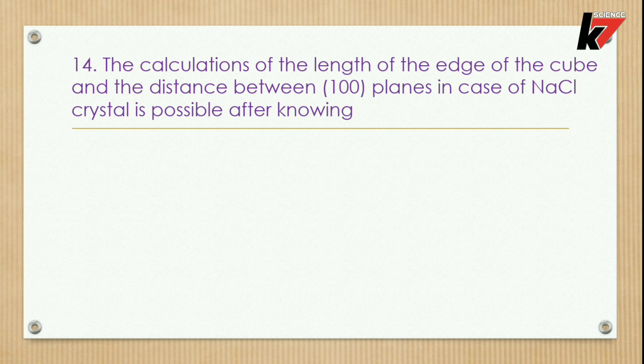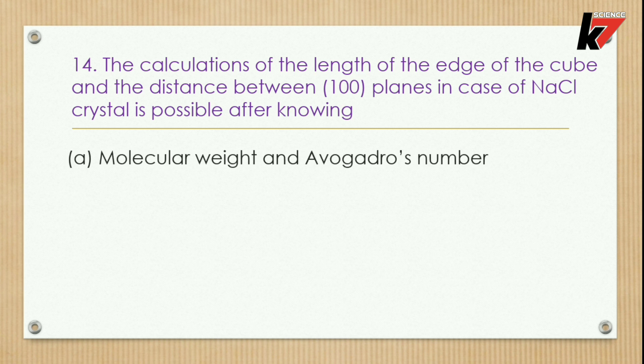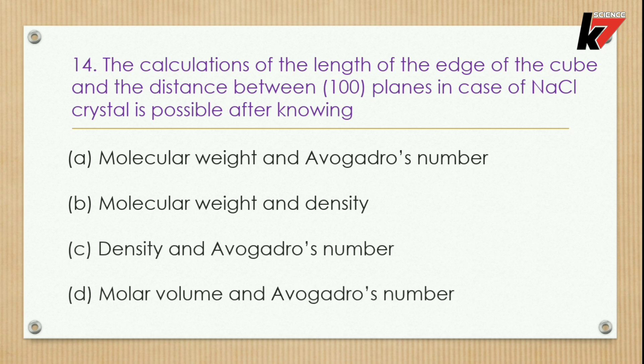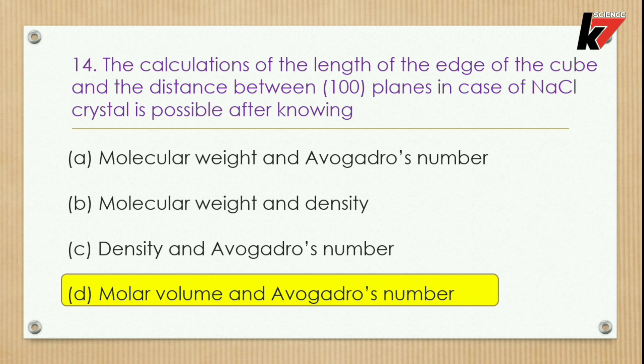Question 14: The calculation of the length of the edge of the cube and the distance between 100 planes in NaCl crystal is possible after knowing — options: molecular weight and Avogadro's number, molecular weight and density, density and Avogadro's number, or molar volume and Avogadro's number. The correct option is the last one: molar volume and Avogadro's number.